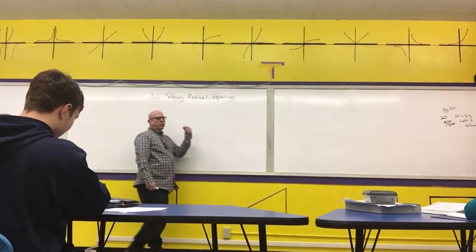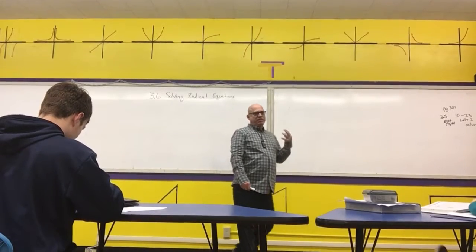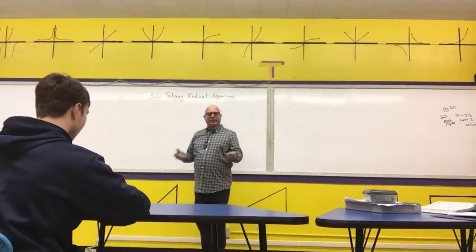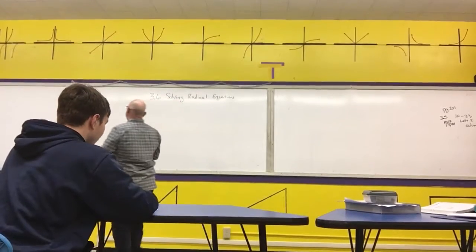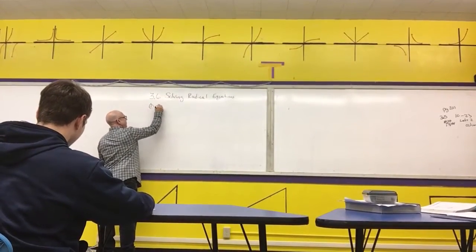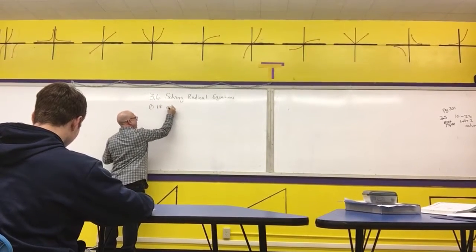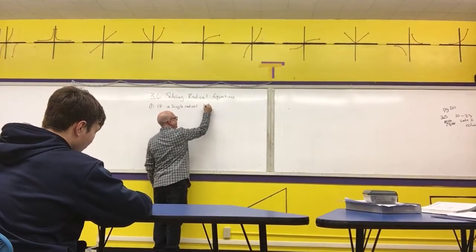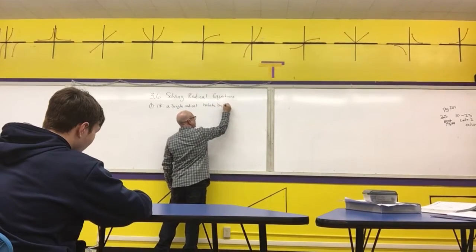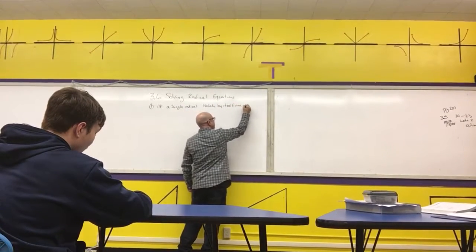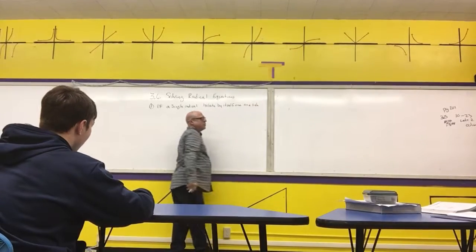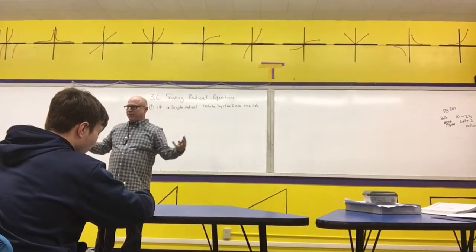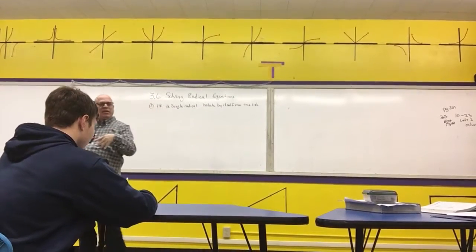So, section 3.6 we're going to take radical equations, and we're going to learn how to solve these. In general, what I need to do is I need to get the x by itself. To do that, if you have a single radical, you want to isolate it by itself on one side.